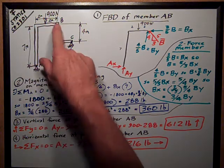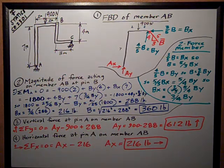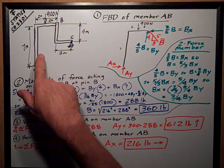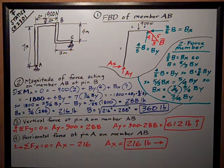AB is not a two-force member because it has three points of application of force: the support at A, the pin at B, and the 900 newton force.